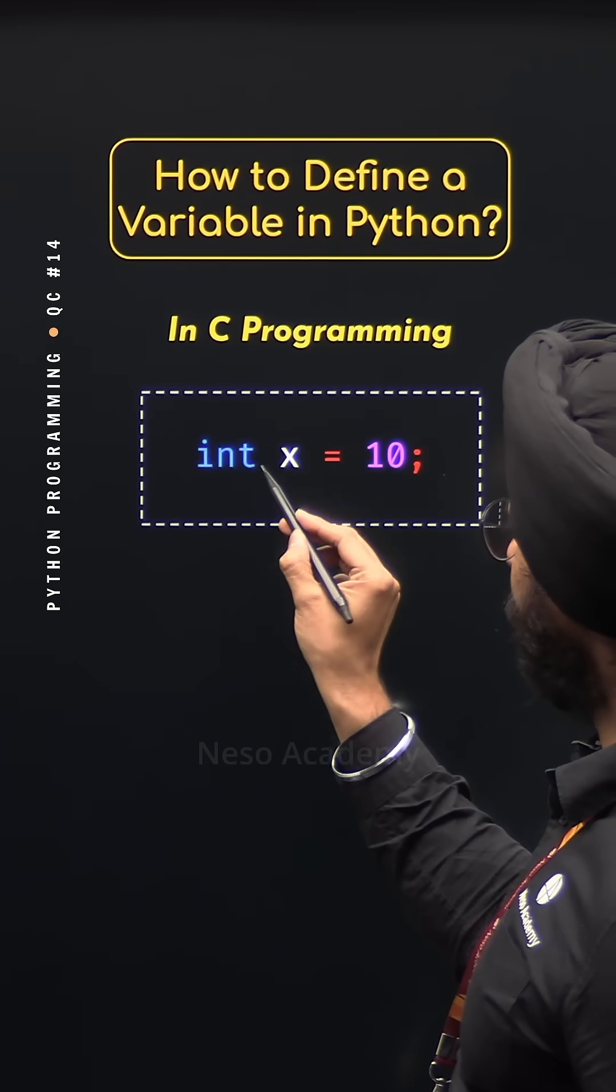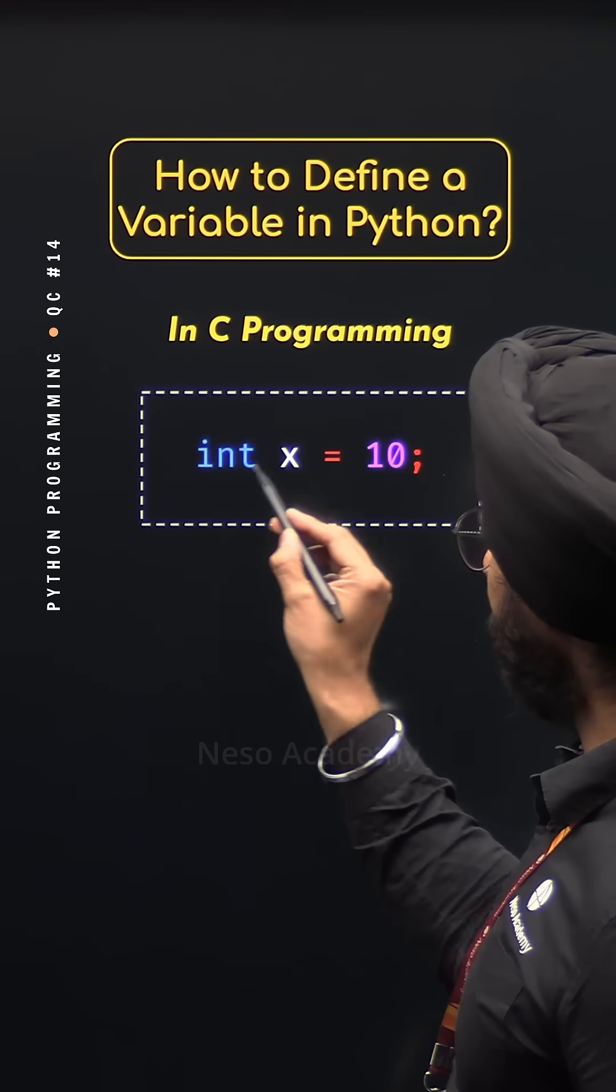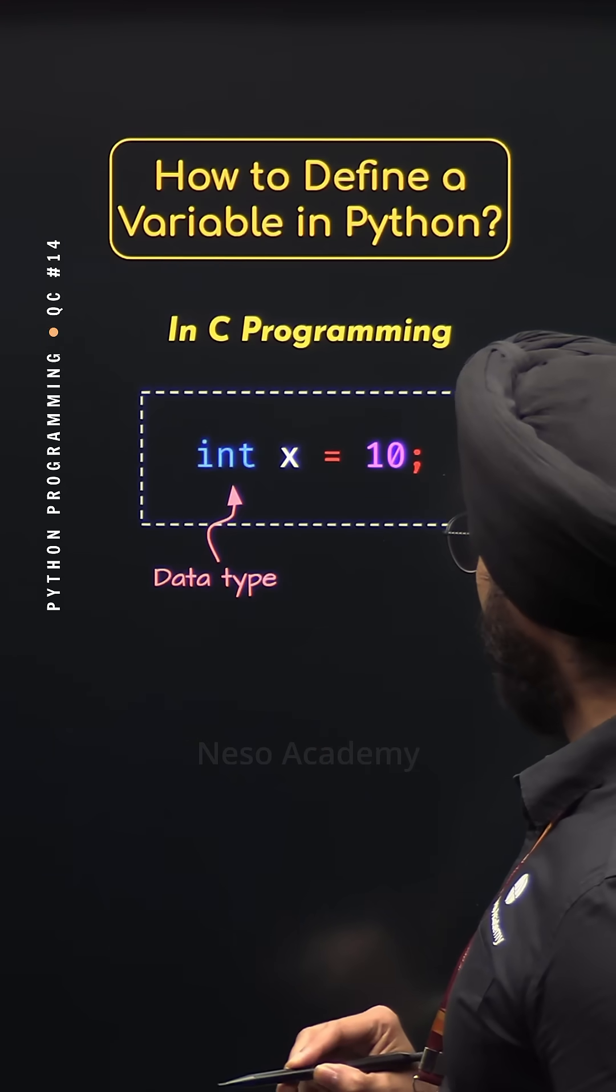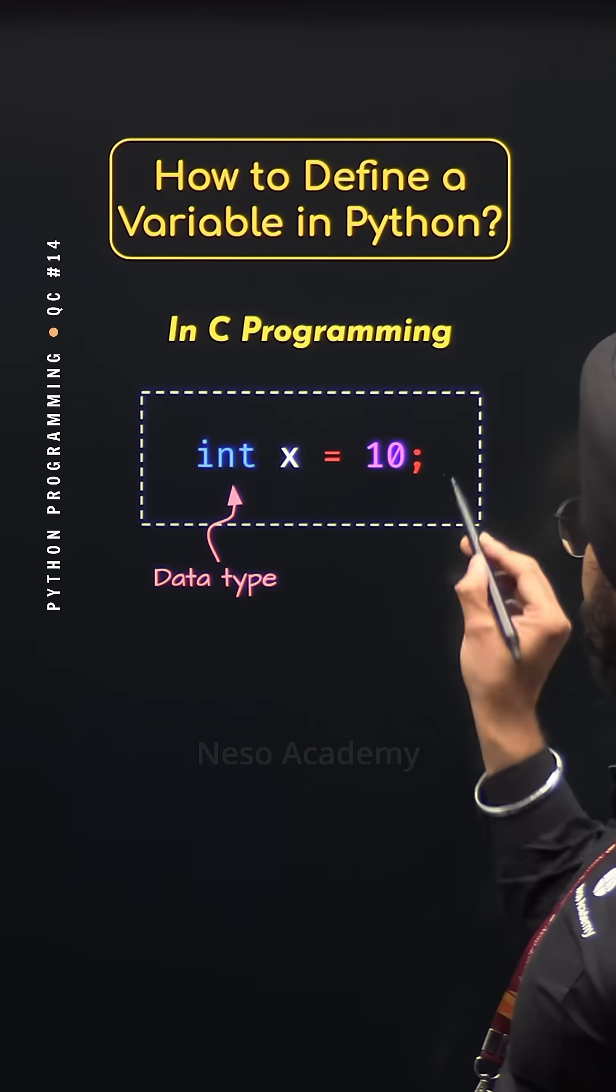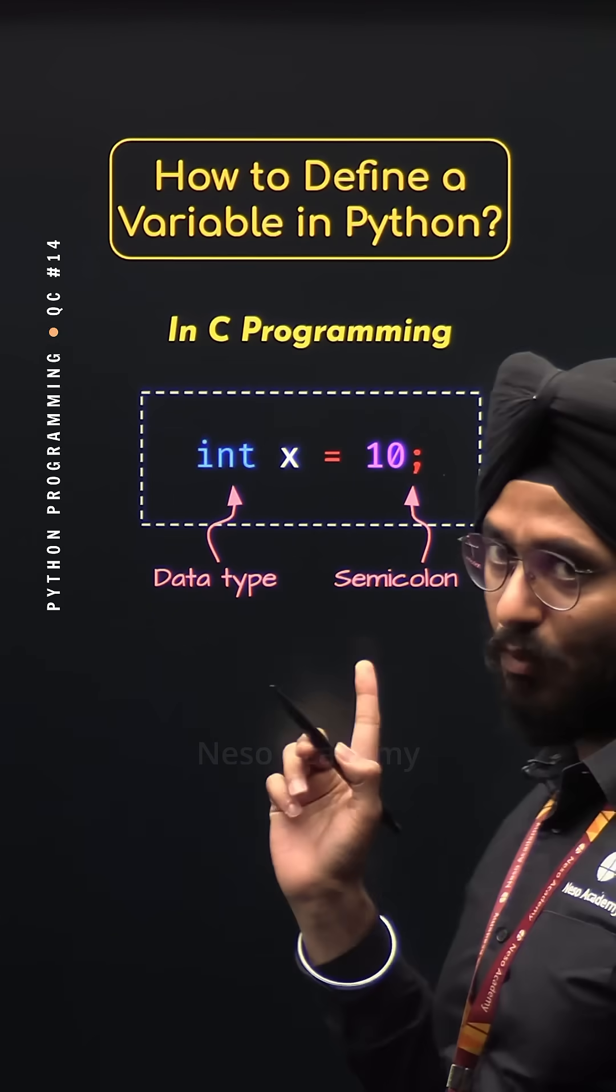Notice that variable x is of type integer and we need to specify this data type. And we need to end the statement with semicolon as well in C programming.